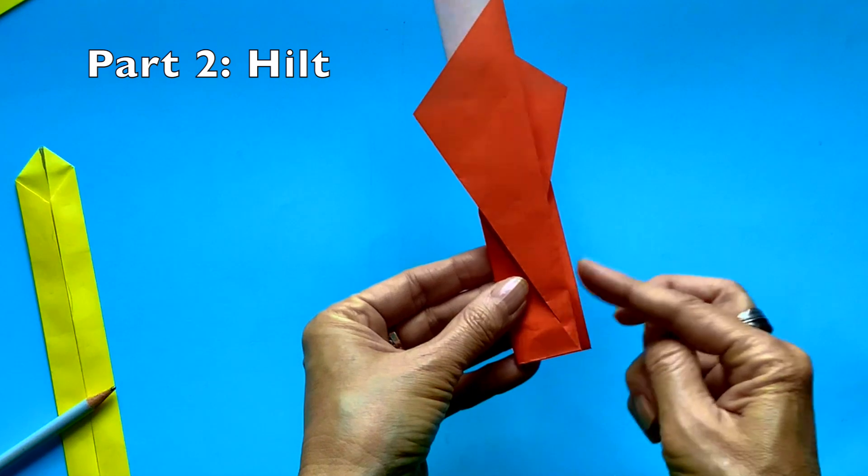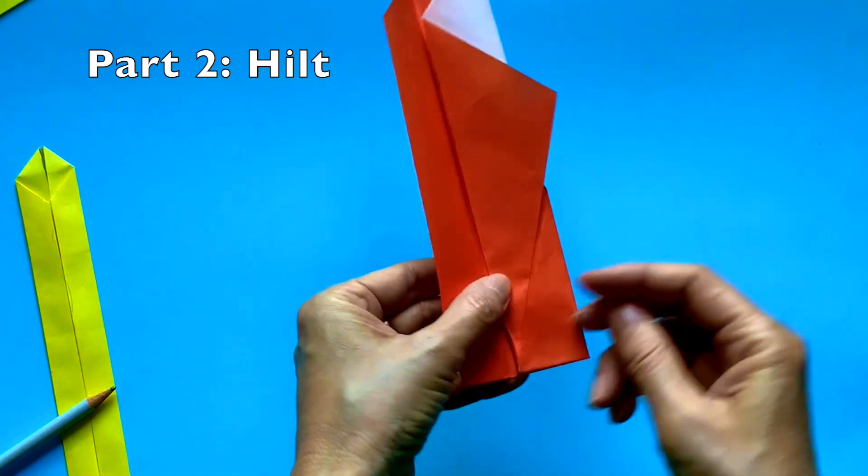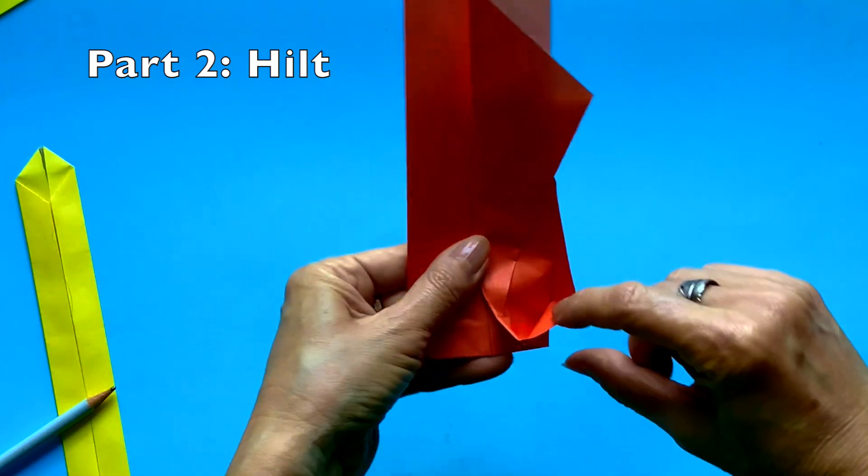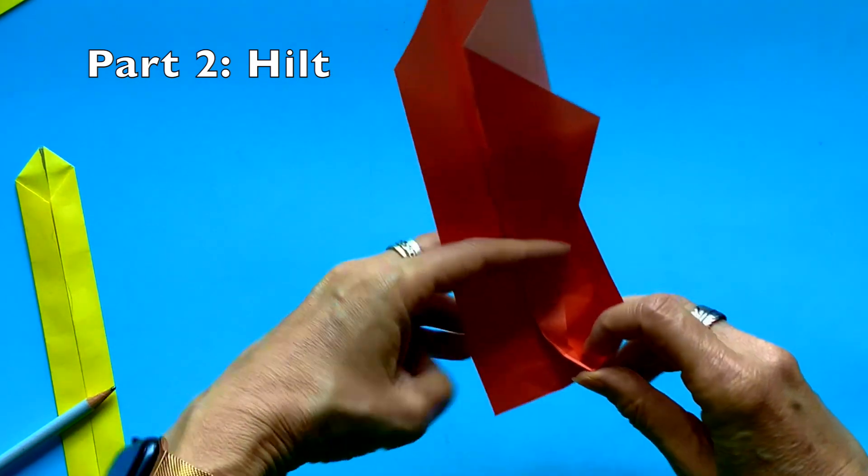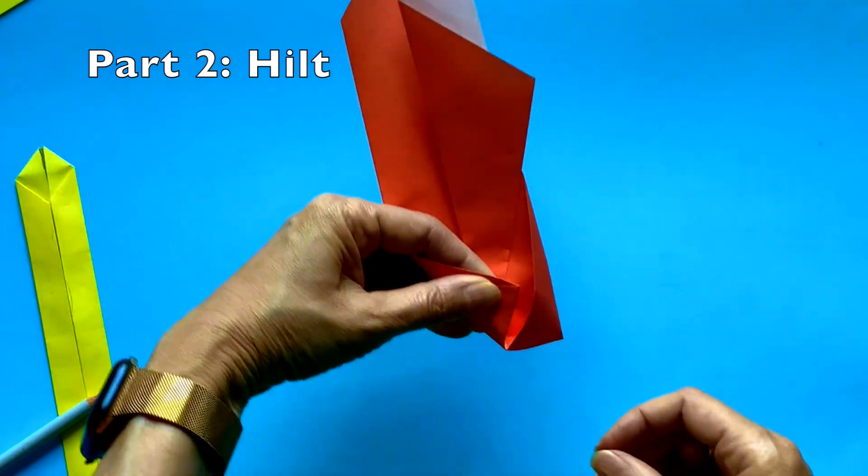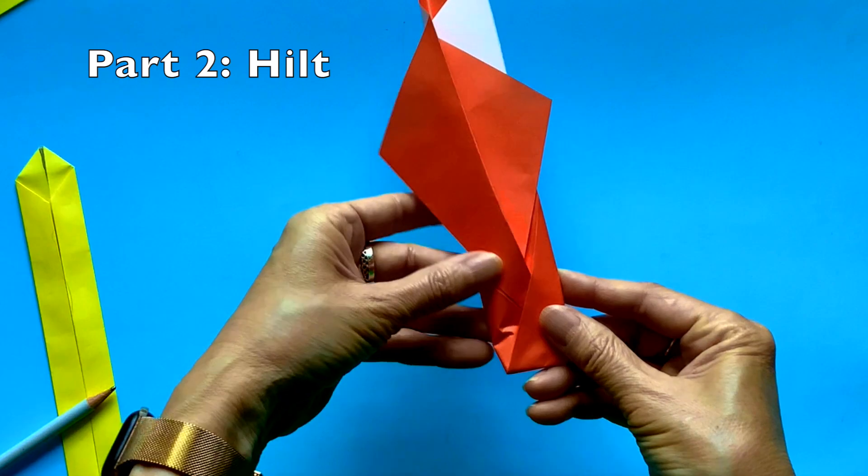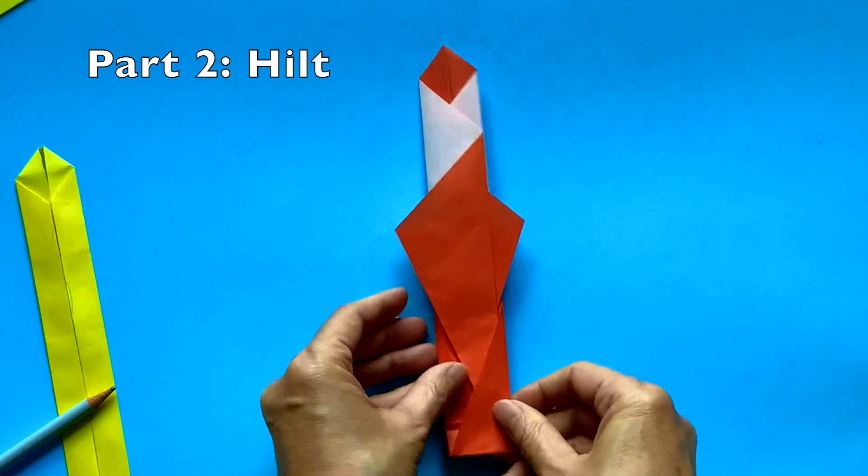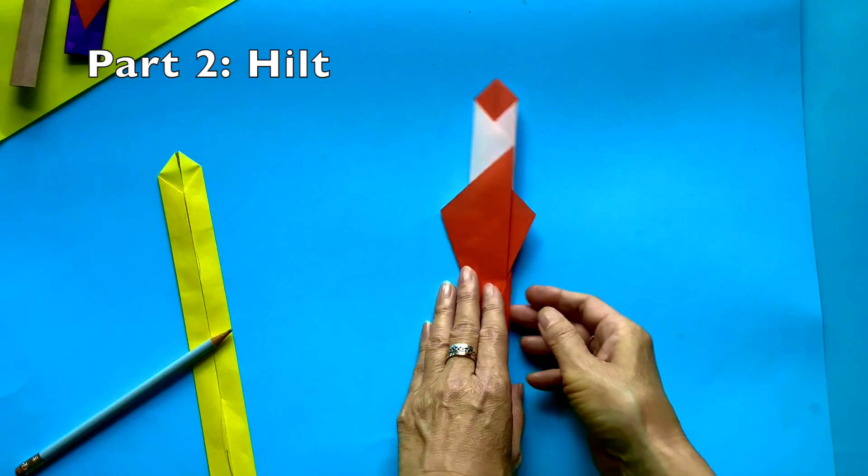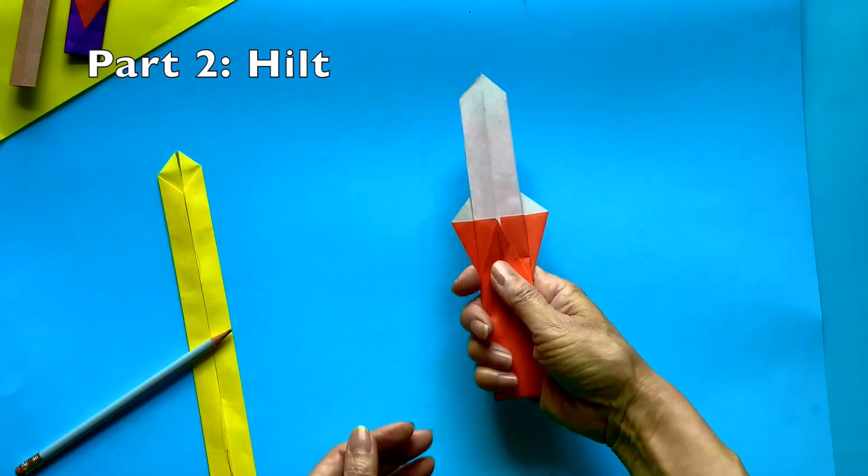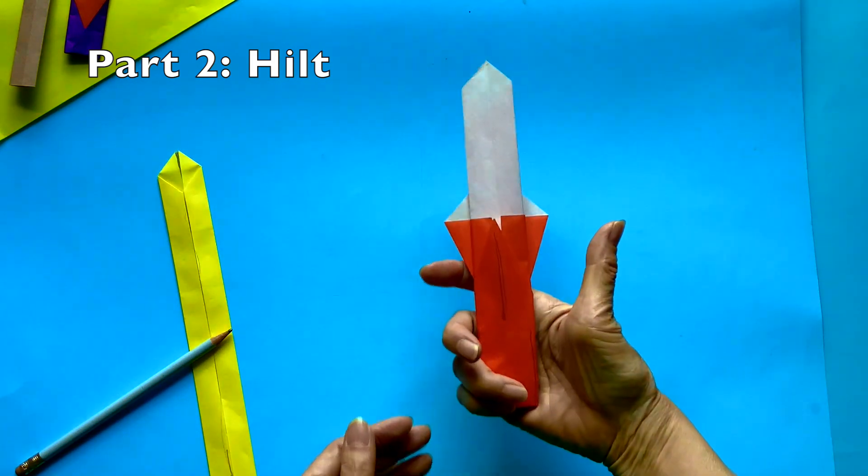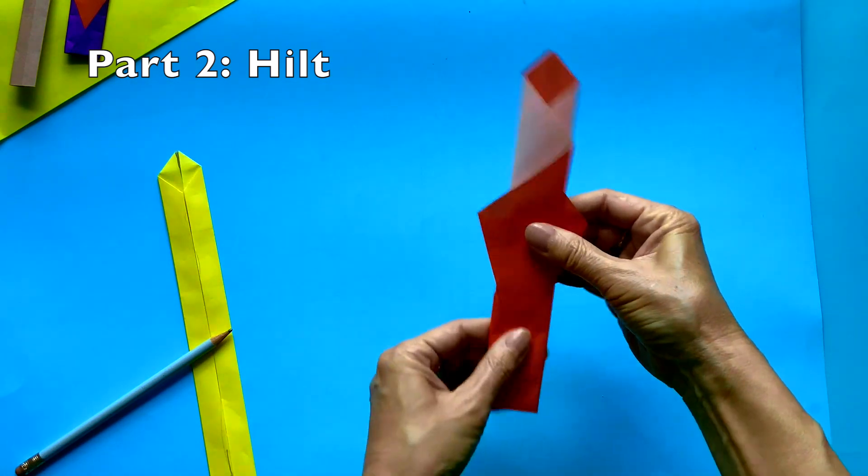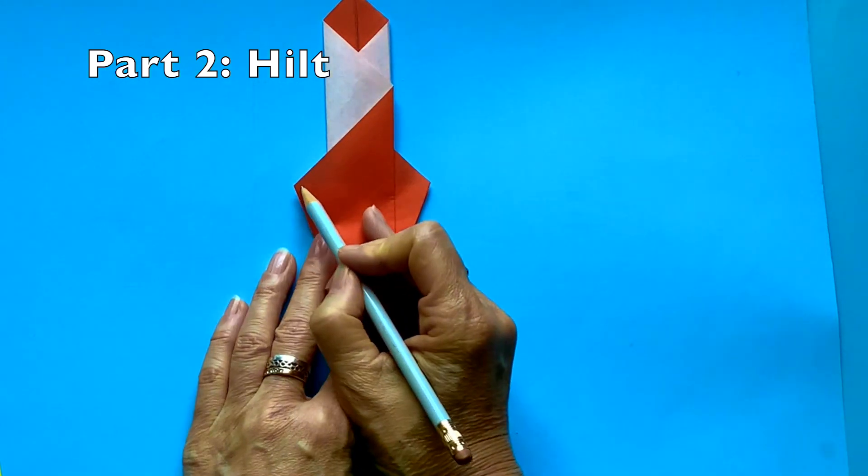And here's the next step. Here's the top layer, and here's the second layer. It has a little triangle pocket right here. And then put the top flap, top layer into that pocket. So this hilt, the sword handle part is now secured. It's not unfolding. And it just itself looks like a whole sword, but this is only the handle hilt. So let's do the next part.